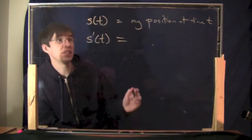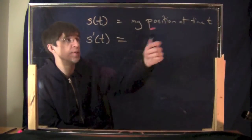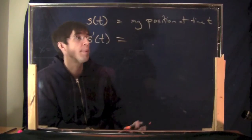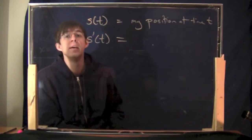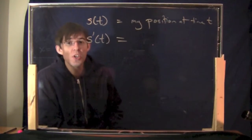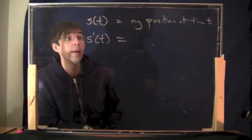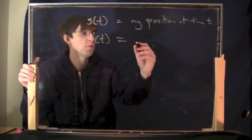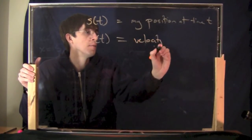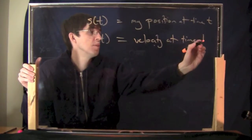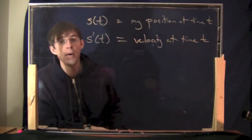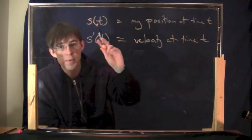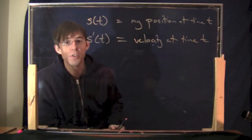Example number one — from physics. If s(t) is a function which describes my position at time t, what is the derivative of that? This would be how fast the position is changing. There's a word for that: how fast the thing is moving. This is called the velocity at time t. It's a very basic and fundamental fact in physics that if you have a function describing the position of something, when you take the derivative, you get a function describing its velocity.